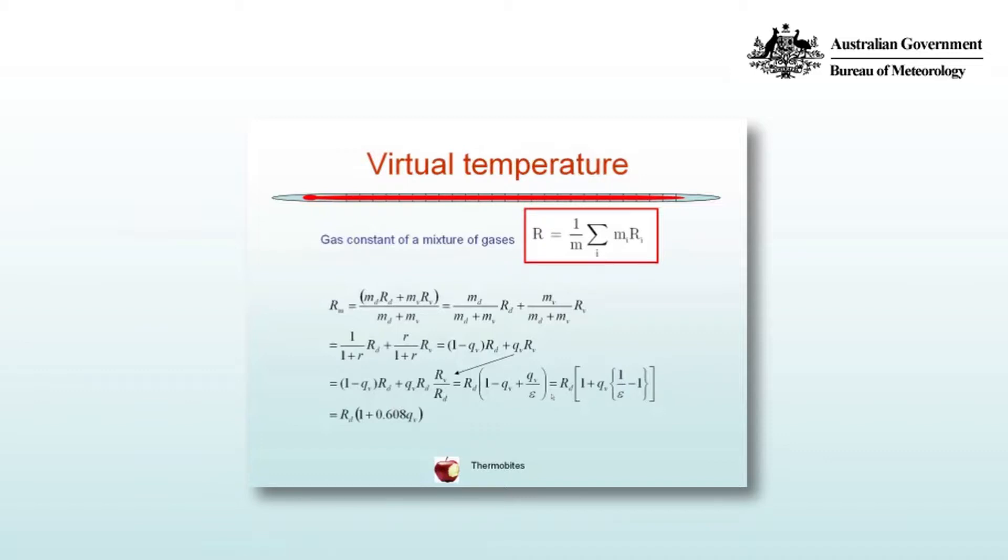Does that make sense? Stop the video and have a think about that for a minute. So how did you go? Did you get what's wrong with that? We've calculated a specific gas constant, but it involves another gas constant and a variable, the specific humidity, which is a measure of the amount of water vapor in the atmosphere. So it's a bit inconvenient to have a variable constant.